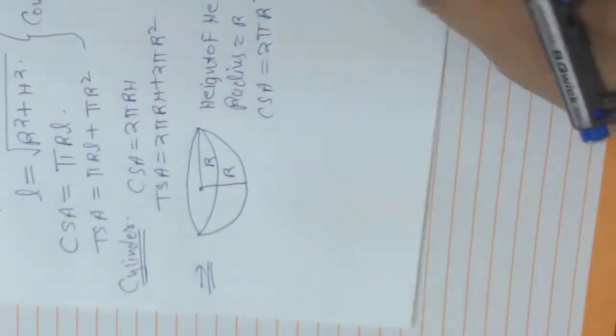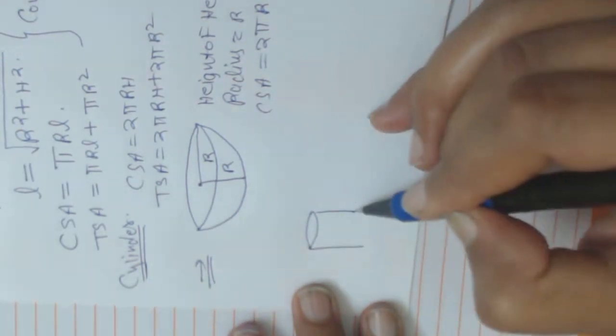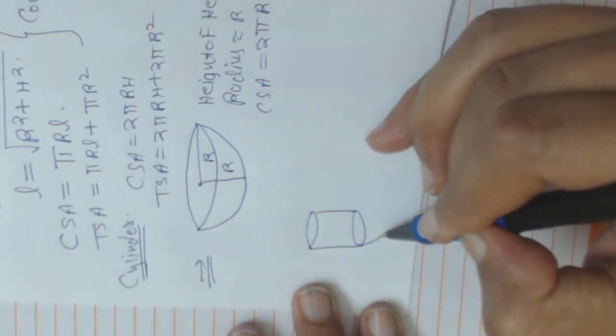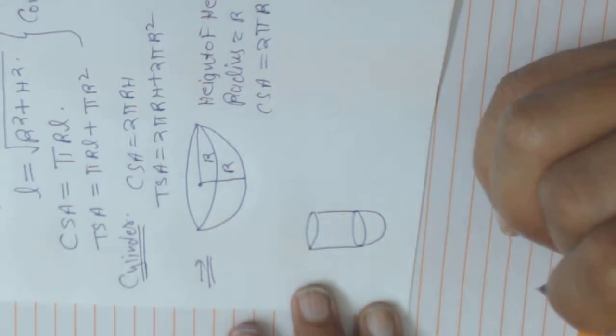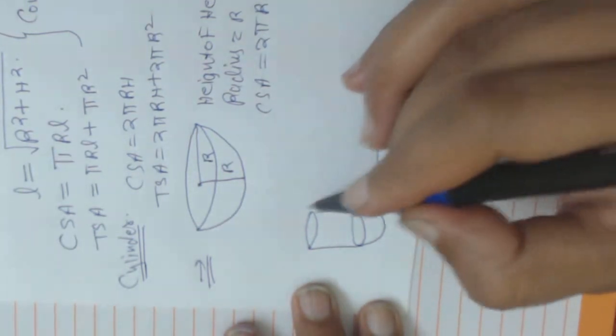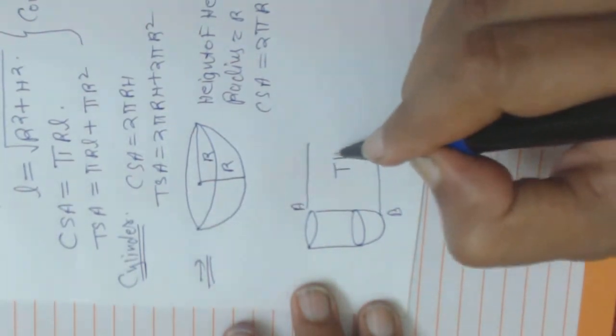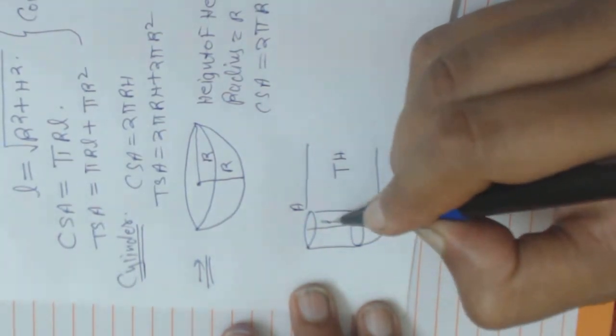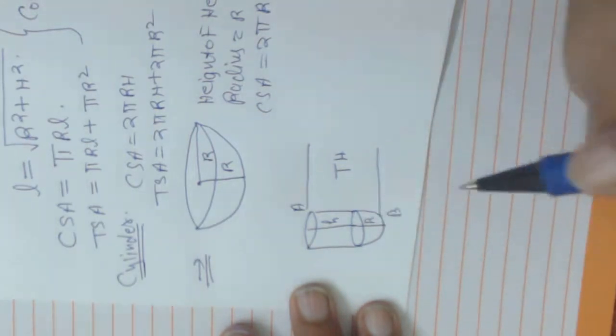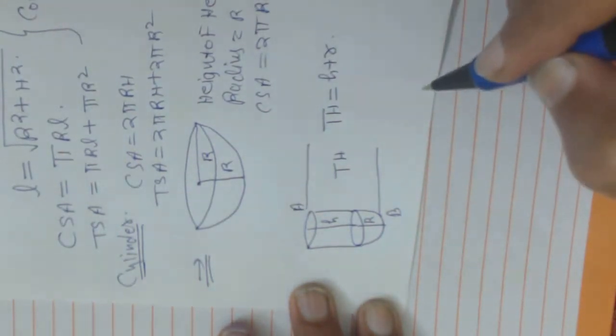Here, so this is a cylinder mounted by a hemisphere. So for this please remember, from A to B is the total height. For cylinder it is small h and it is r. So total height is small h plus r.